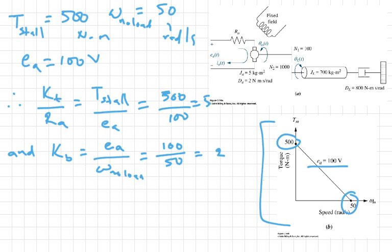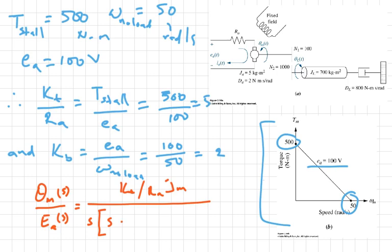So we know our K_T over R_A and we know K_B. If we substitute this into our equation, recall the equation that we derived: θ_M(s) over E_A(s) equals K_T over R_A J_M times 1 over S times (S plus 1 over J_M times (D_M plus K_T K_B over R_A)).